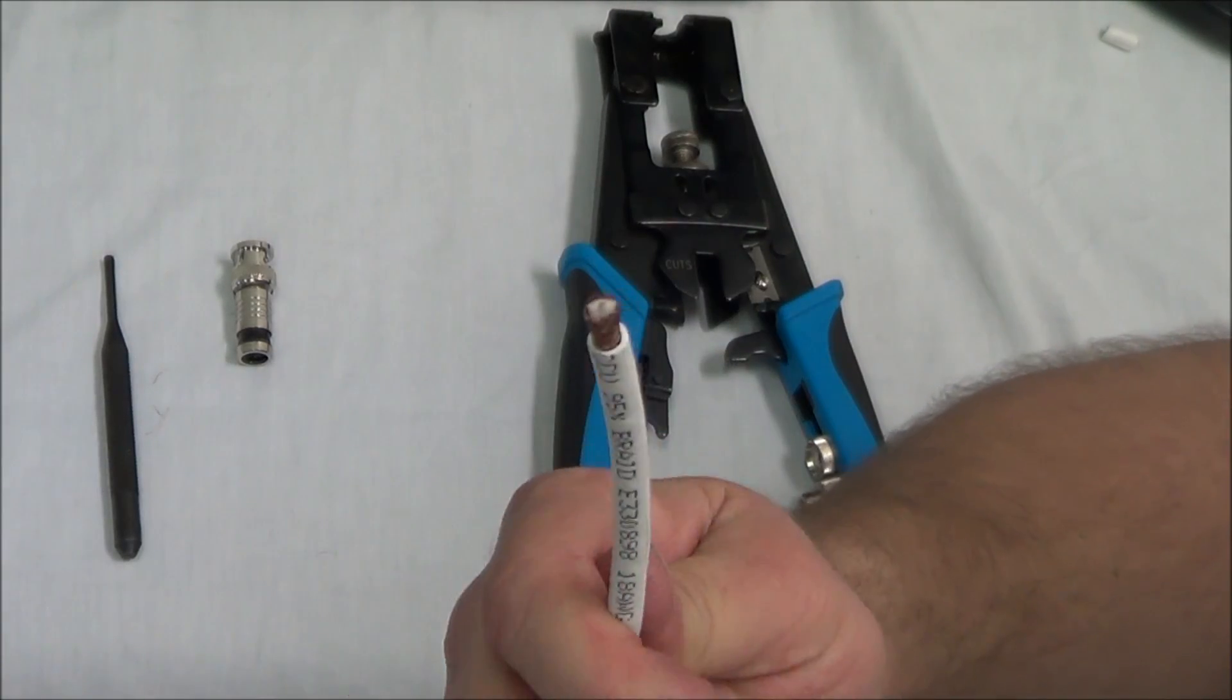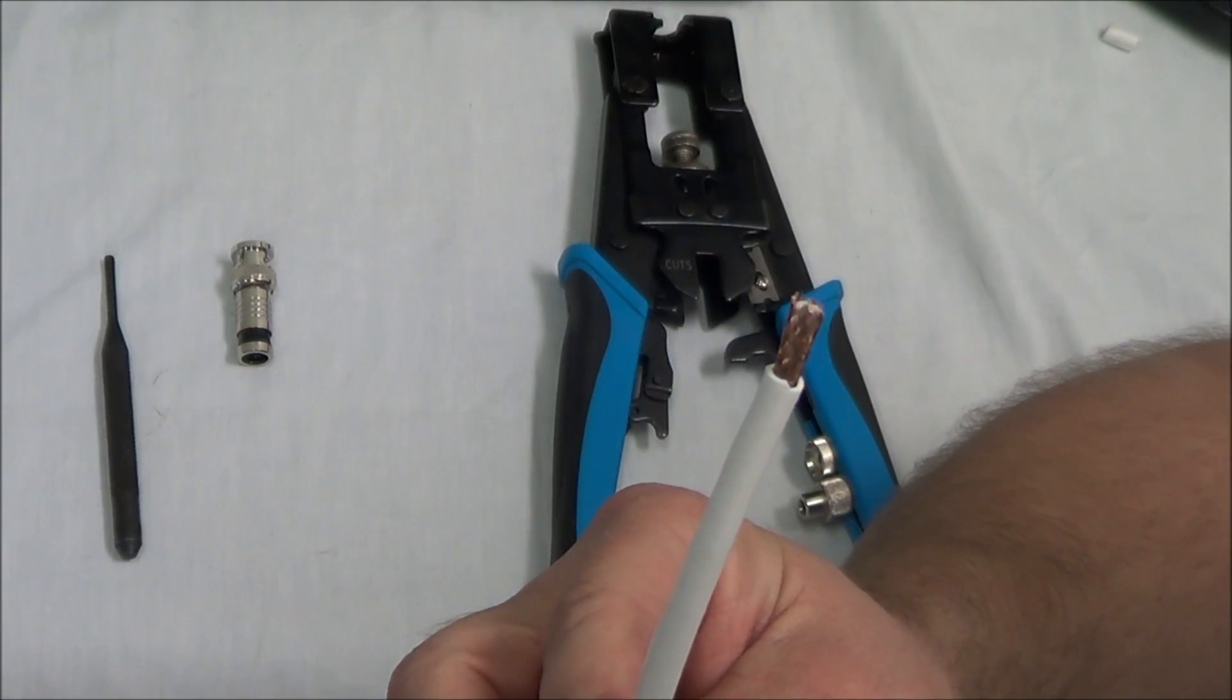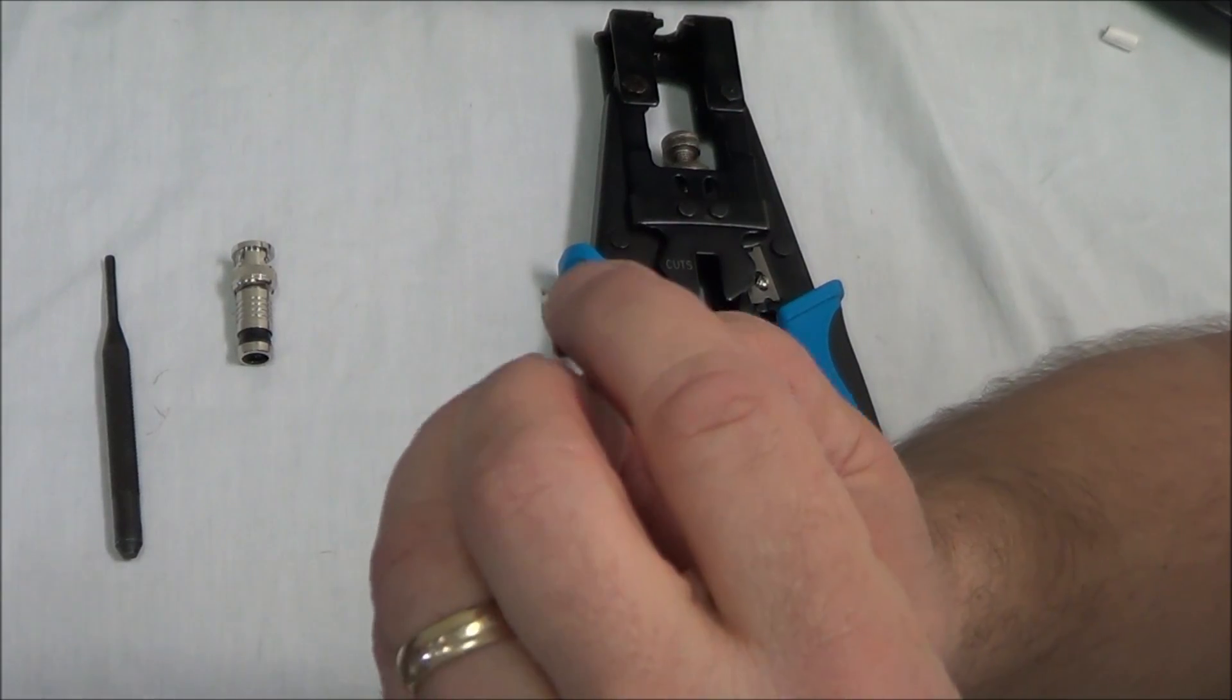Now you can see we have our exposed outer braided wire. We're just going to take that and just fold it down a little way.